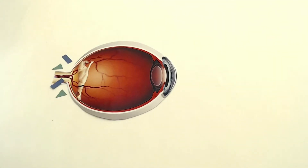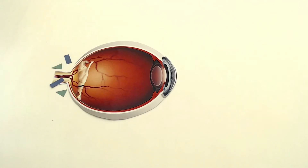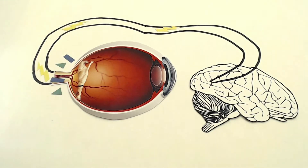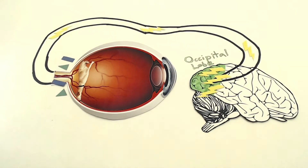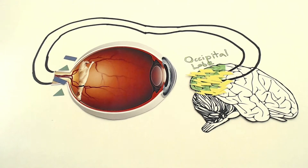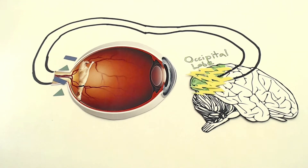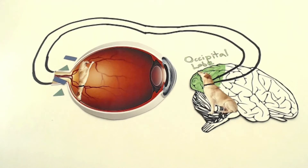From there, light-sensitive cells called photoreceptors trigger nerve impulses that send electrical signals to the brain. Finally, these electrical signals arrive at the occipital lobe, the part of the brain that deals with vision, and are converted back into a 3D image.